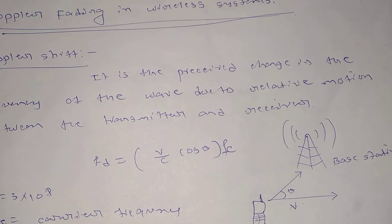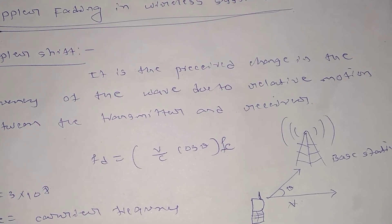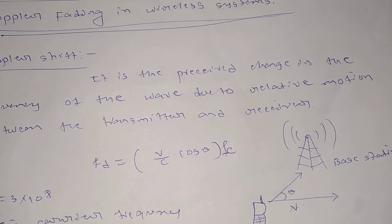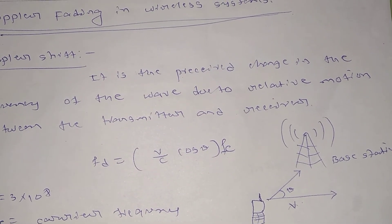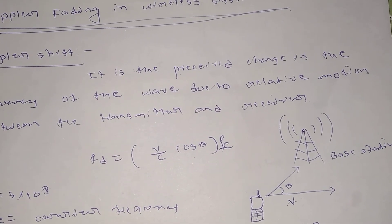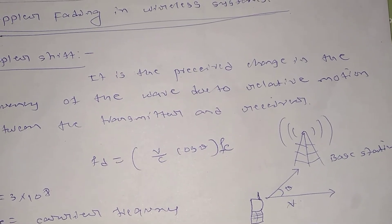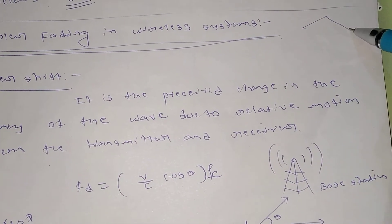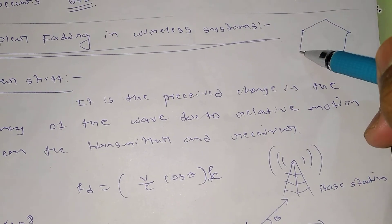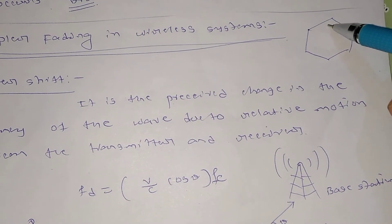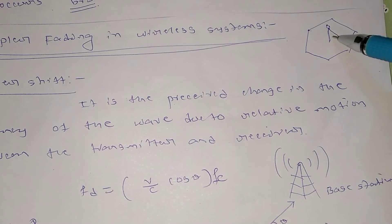Doppler fading actually comes into picture whenever there is a relative motion between the transmitter and the mobile receiver. Let's say you have got a car and you are traveling from one place to another place and you are currently connected to one base station. Base stations are generally assumed to have a shape like this, this is the antenna and it is transmitting the signals.